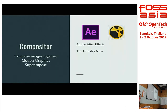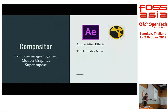The compositor is used for combining images together, doing green screen keying, extracting subjects from the background, and adding text, logos, and effects. The popular software is Adobe After Effects, or in larger studios where compositing is more complex, they might use Nuke from The Foundry, or Flame from Autodesk.